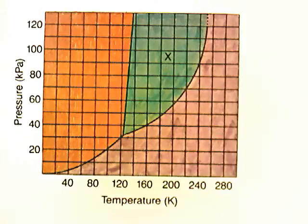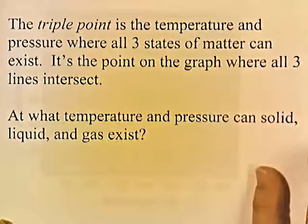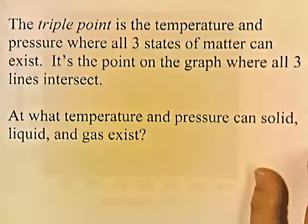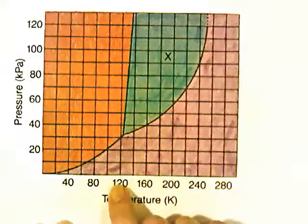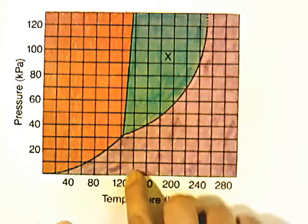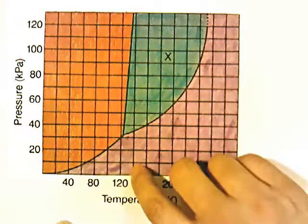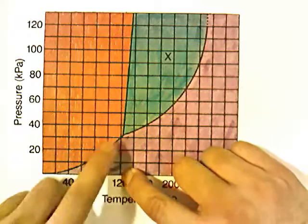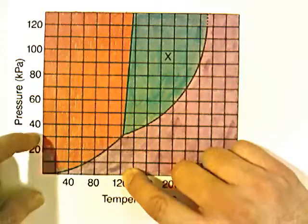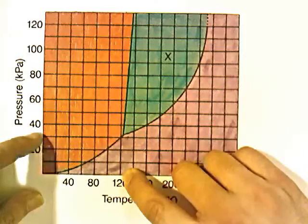The triple point is the temperature and pressure where all three states of matter can exist simultaneously. It's the point on the graph where all three lines intersect. Looking at the diagram, the three lines meet at a point where the temperature is between 120 and 140 Kelvin — approximately 135 Kelvin — and the pressure is a little above 30 kilopascals, approximately 32 kilopascals. So all three states of matter can exist at about 135 Kelvin and 32 kilopascals.